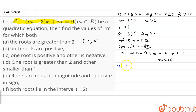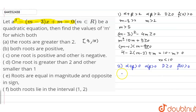For the next part, when both roots are positive, we write: alpha plus beta should be greater than 0, alpha beta should also be greater than 0, D should be greater than or equal to 0, and f(0) should be greater than 0 because both roots are greater than 0. When alpha plus beta is greater than 0, then m minus 3 should be greater than 0, so m should be greater than 3.